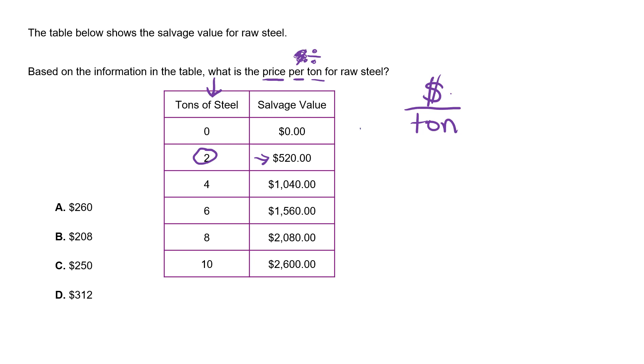We're going to divide that by the ton. We're going to look here at two. We could take any of these numbers, but we're going to look at number two. For two tons of steel, we get $520. And then per, which is that division sign, the tons of steel. So, $520 for two tons of steel. And I'm going to divide that. Two goes into five, two times, with one left over. Two goes into twelve, six times, with none left over. And two goes into zero, zero times.